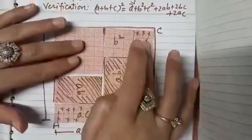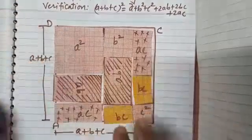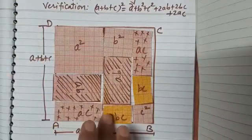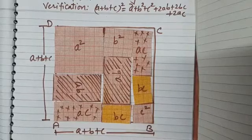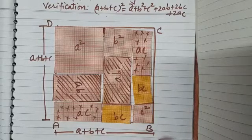So all the pieces are completely covering the square ABCD of side A+B+C.